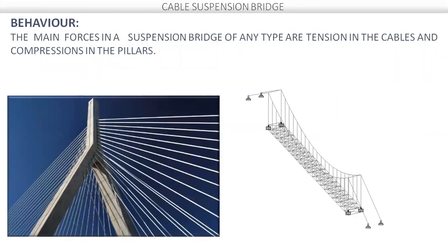The main forces in a suspension bridge are tension in the cables and compression in the towers. The cables are always in tension and the towers carry compression force. The tension in the cables acts throughout the span and we design the cable suspension system for tension, while the towers are designed for compression.